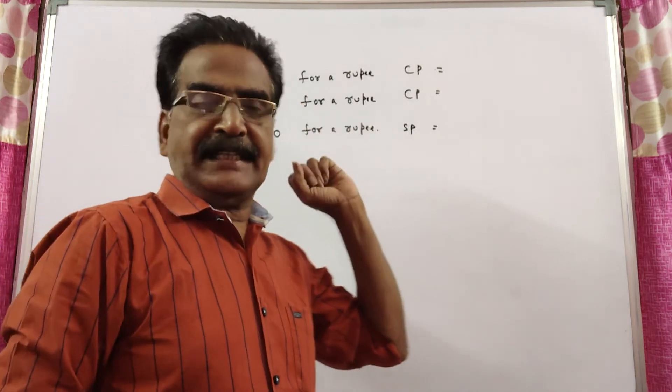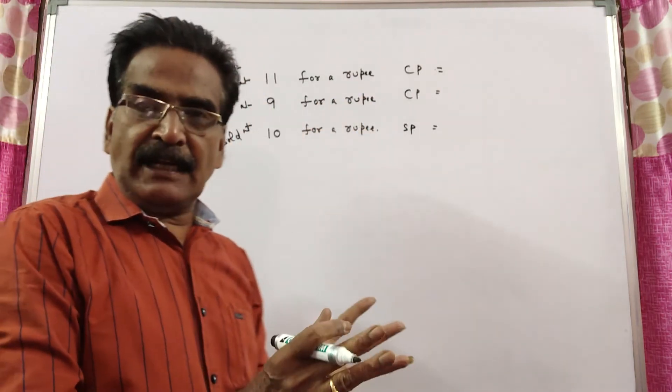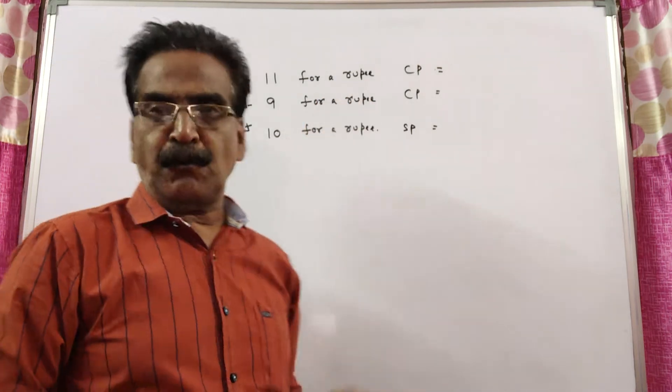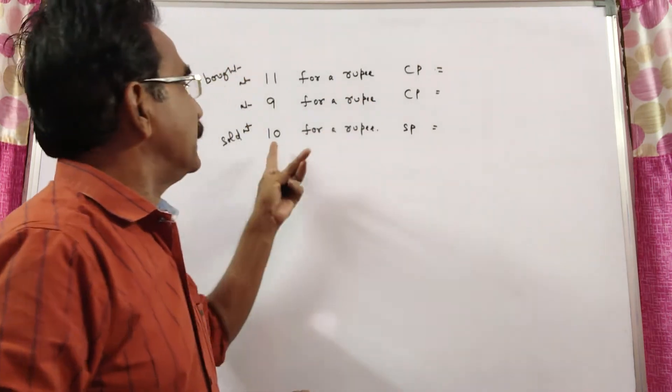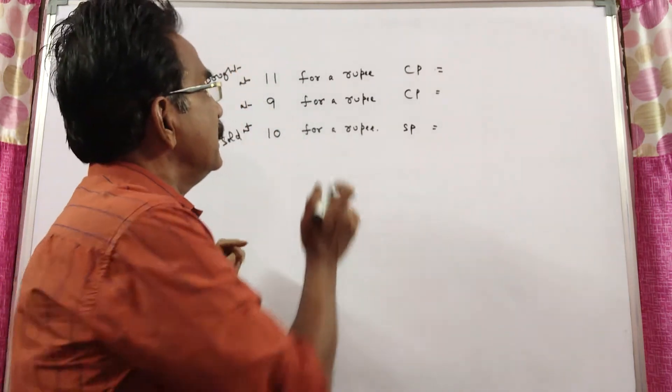See, oranges are bought at 11 for a rupee and an equal number at 9 for a rupee, and sold them at 10 for a rupee. Find the loss or gain percent.